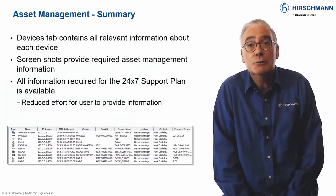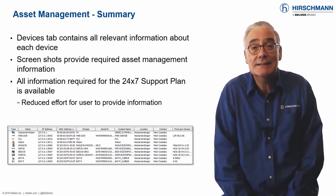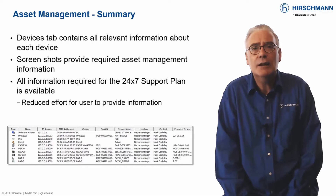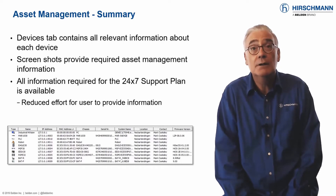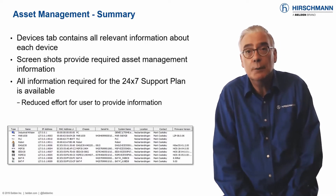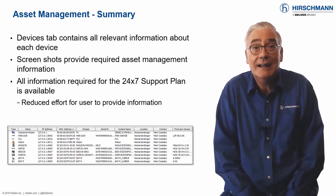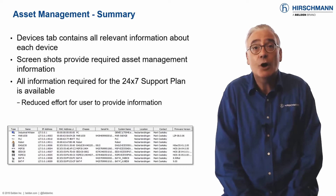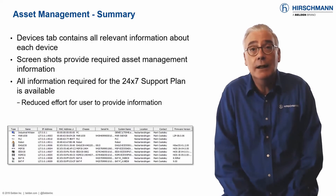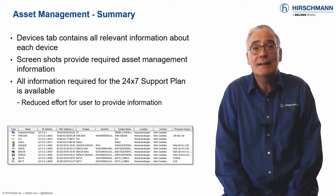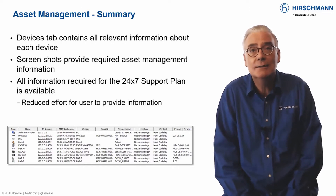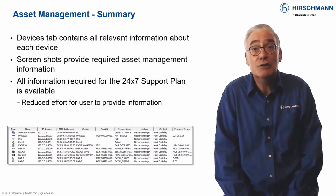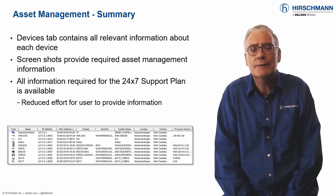Industrial HiVision provides a concise summary of your network infrastructure devices. This includes device type, serial number, software version, location, and other relevant information. All this information is contained on a single screen and can be exported into a single spreadsheet. The asset management summary in Industrial HiVision can save you hours of effort.